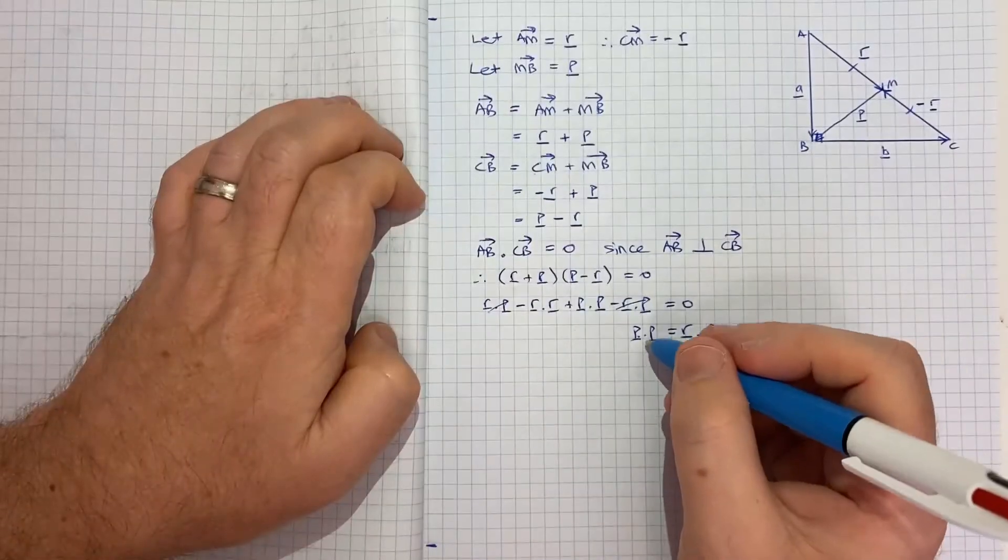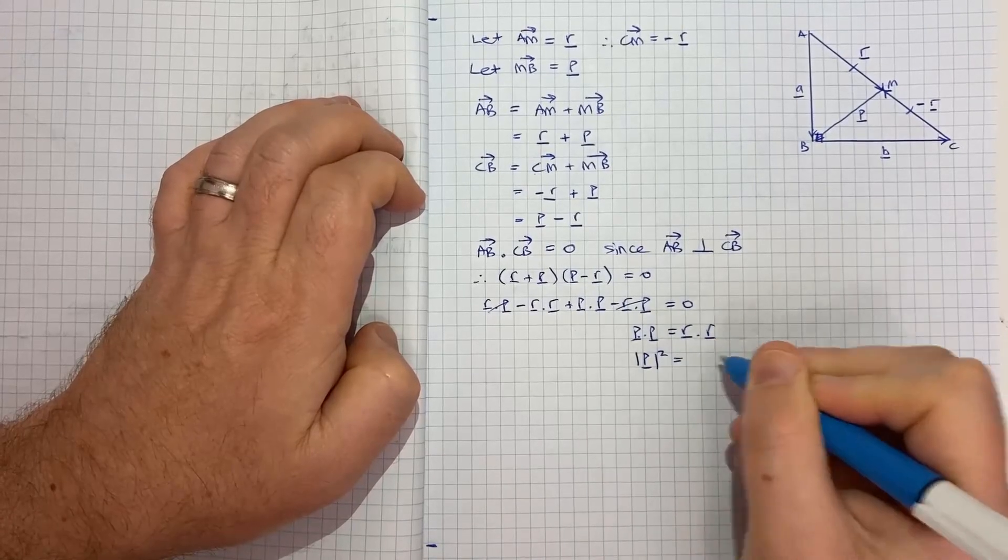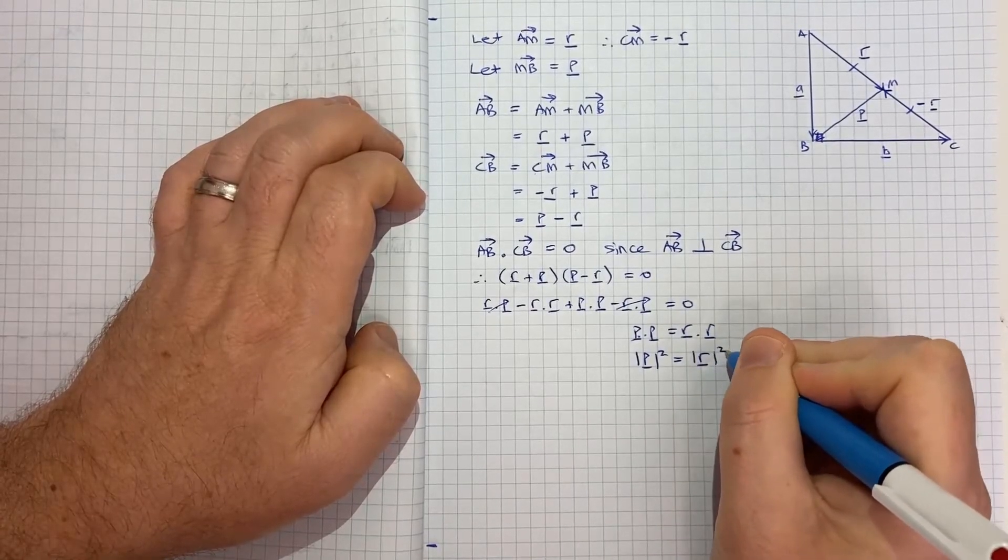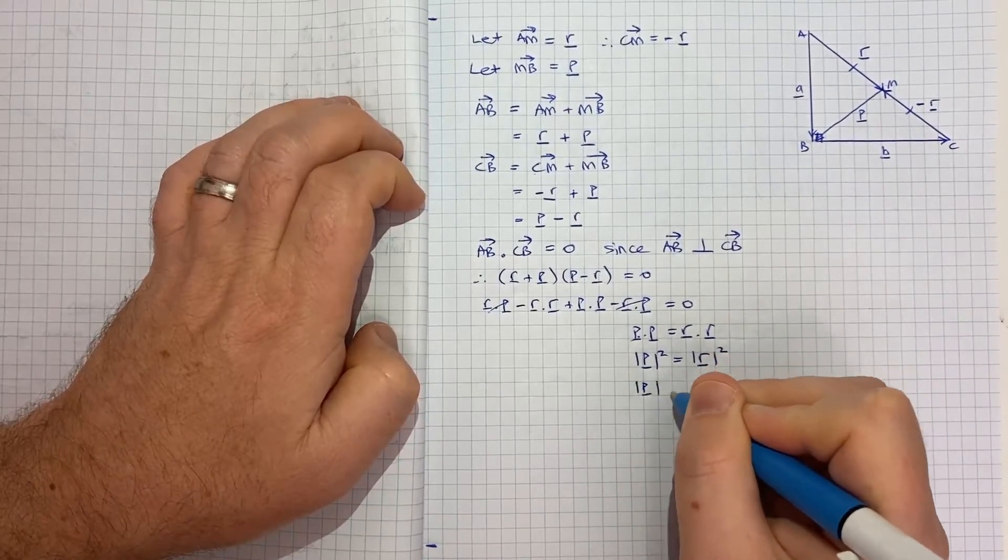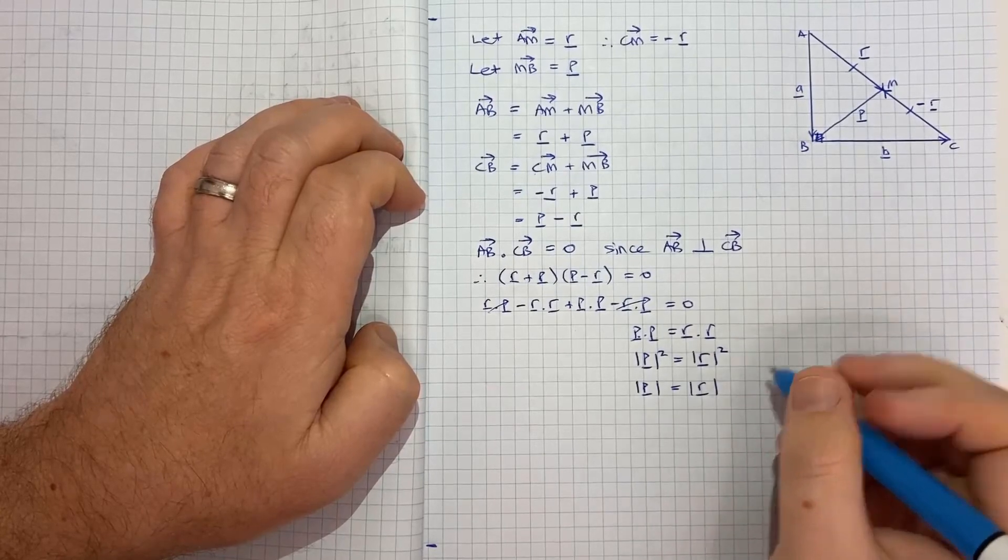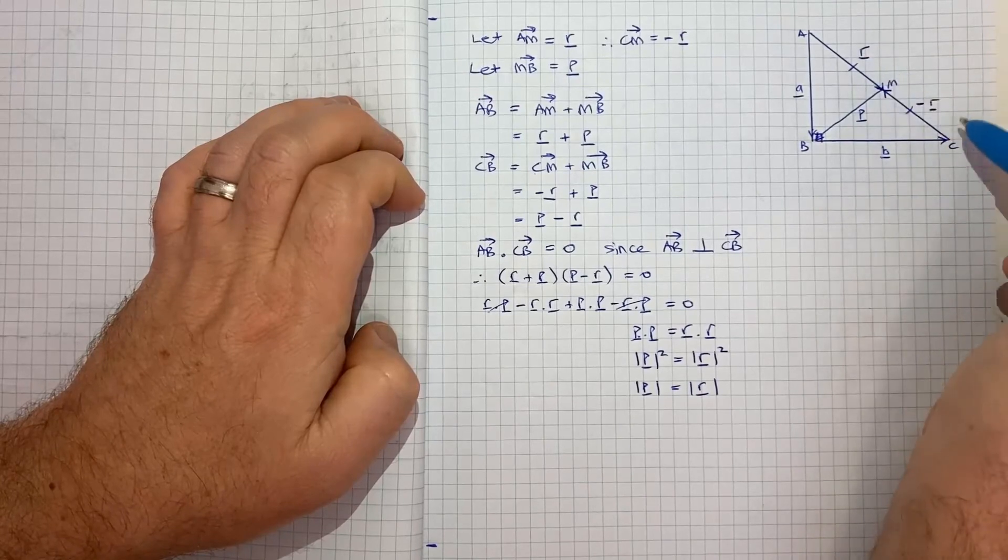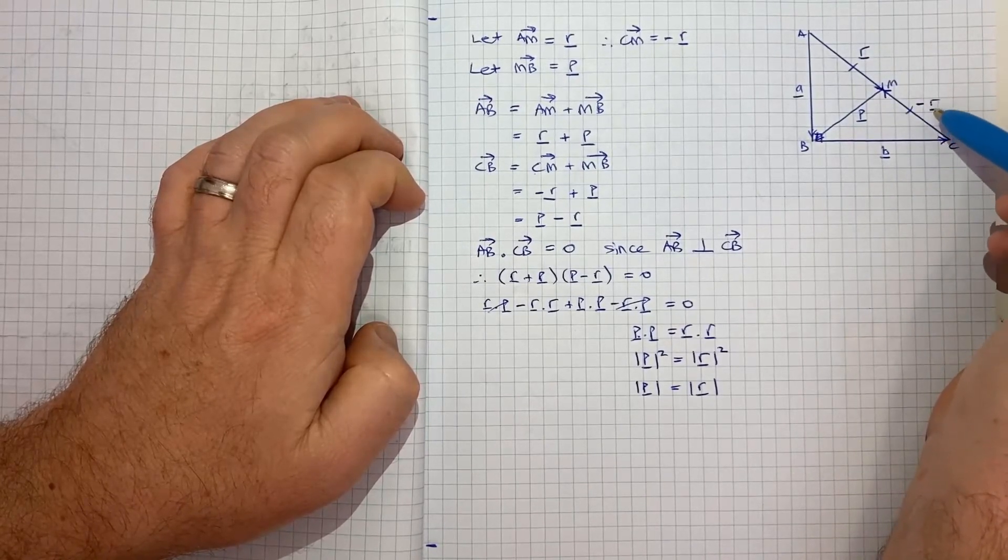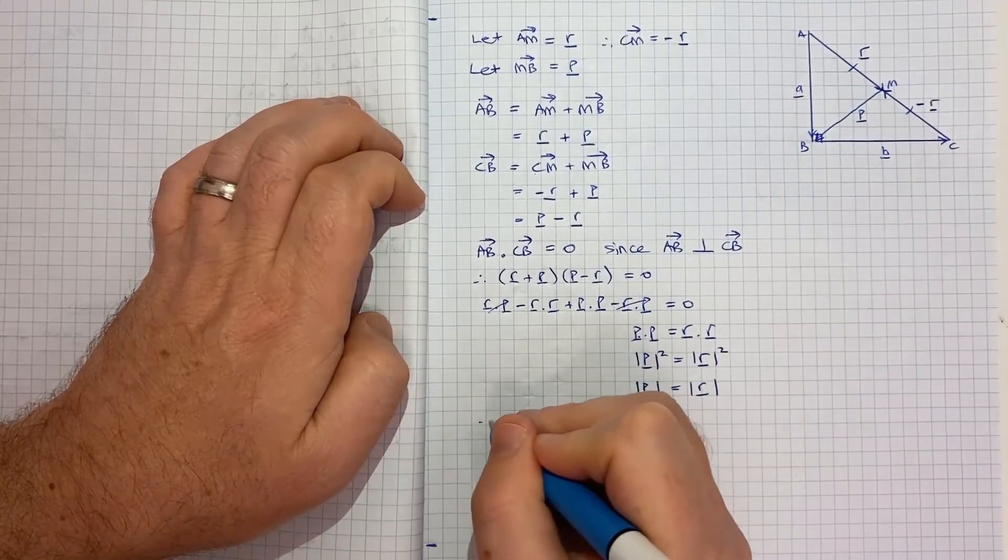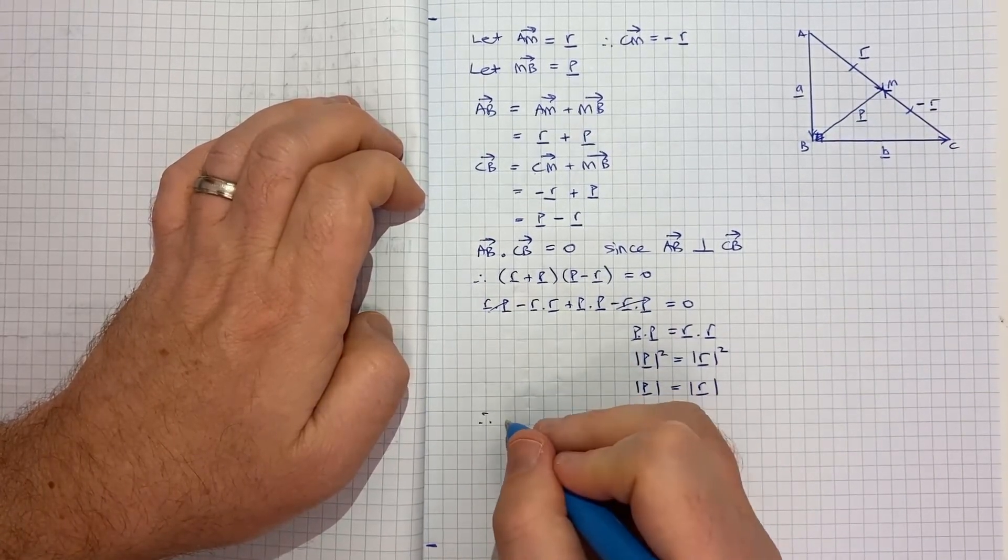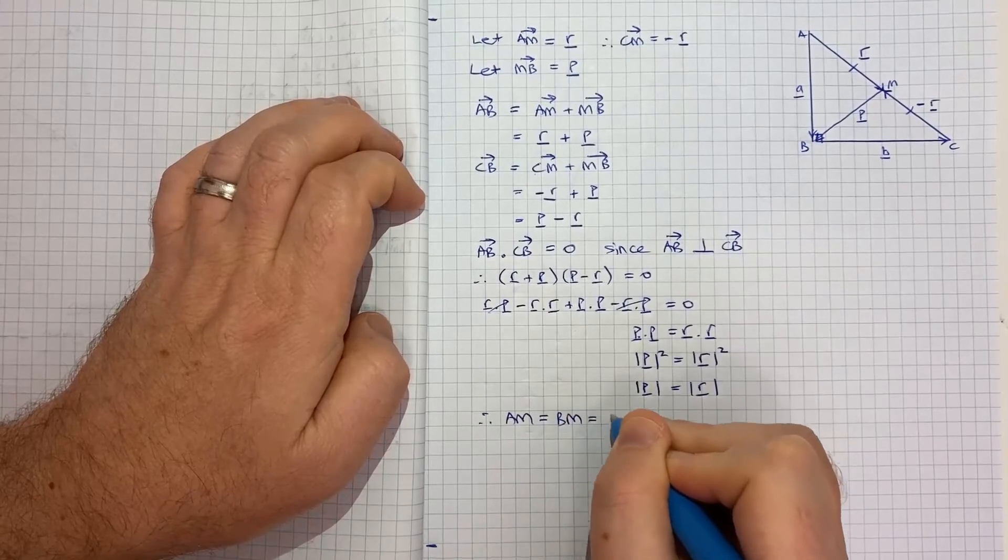These two will cancel. This has a negative, so I'll bring it over. And that gives us p vector times p vector equals r vector times r vector. Multiplying a vector by itself gives you the magnitude squared. So that's the magnitude of p vector squared equals the magnitude of r vector squared. And then we can just take the square root of both sides. So the magnitude of p vector equals the magnitude of r vector. Now that gives us our result because a to m is r vector and c to m is the same magnitude but opposite direction. Now we know p has that same magnitude, so therefore we can conclude once again that a m is equal to b m is equal to c m.